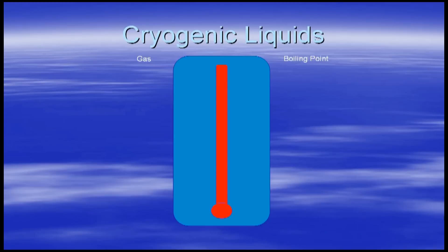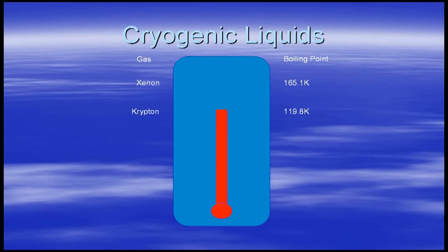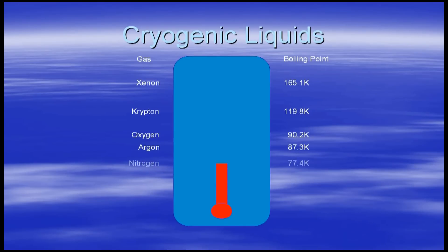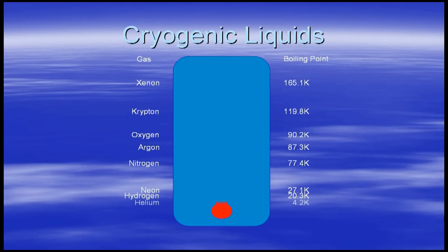Now that we have introduced the Kelvin scale, let's look briefly at some of the very cold, or cryogenic, liquids. Starting with the noble gas xenon, which boils at 165 Kelvin; krypton at about 120 Kelvin; oxygen, which makes up about 21% of our atmosphere, at 90 Kelvin; argon at 87 Kelvin; nitrogen, which is about 78% of our atmosphere, at 77 Kelvin; neon at 27 Kelvin; hydrogen at 20 Kelvin; and helium at 4.2 Kelvin under one atmosphere. This is helium-4. The much rarer helium-3 isotope boils at 3.2 Kelvin.